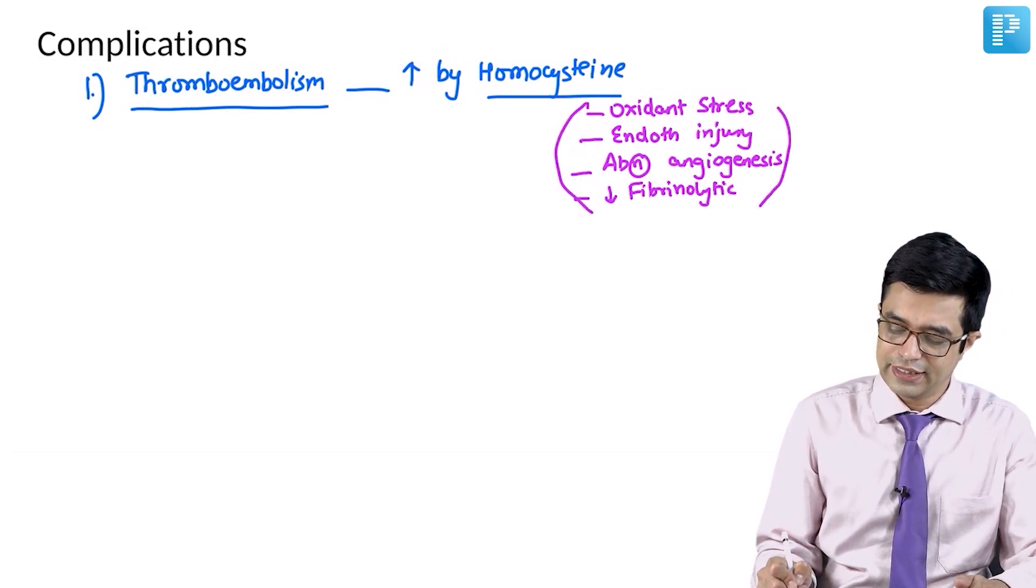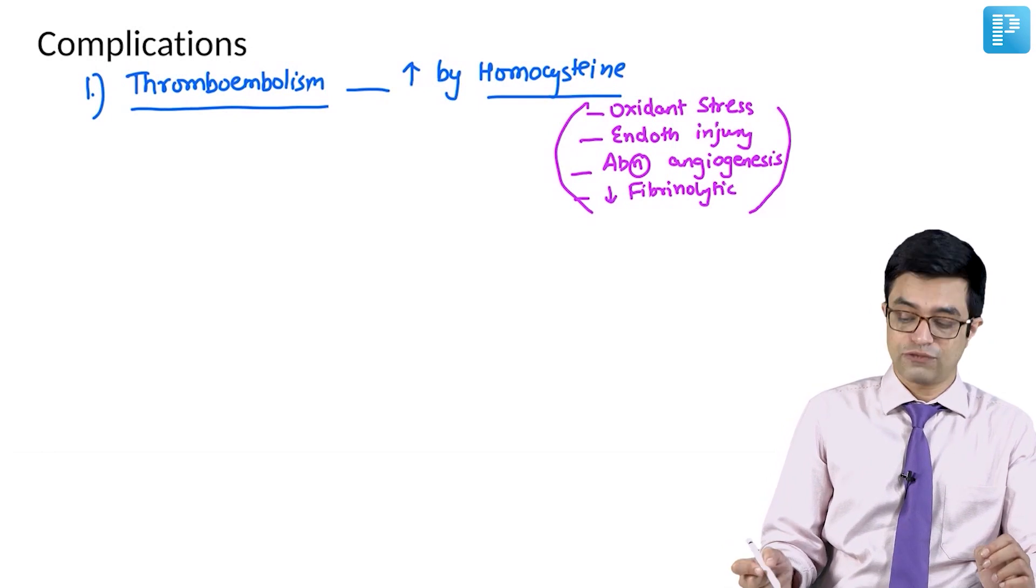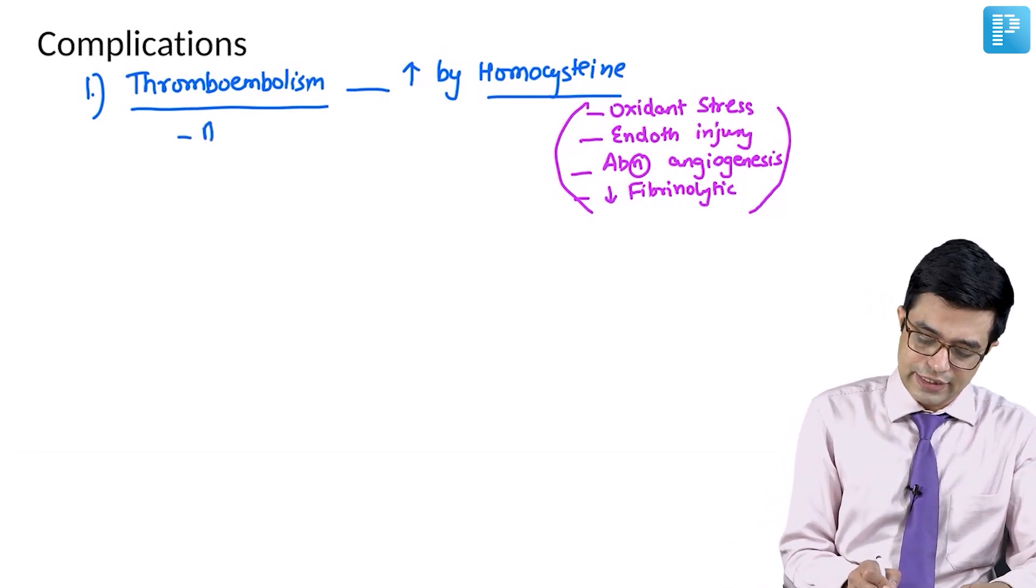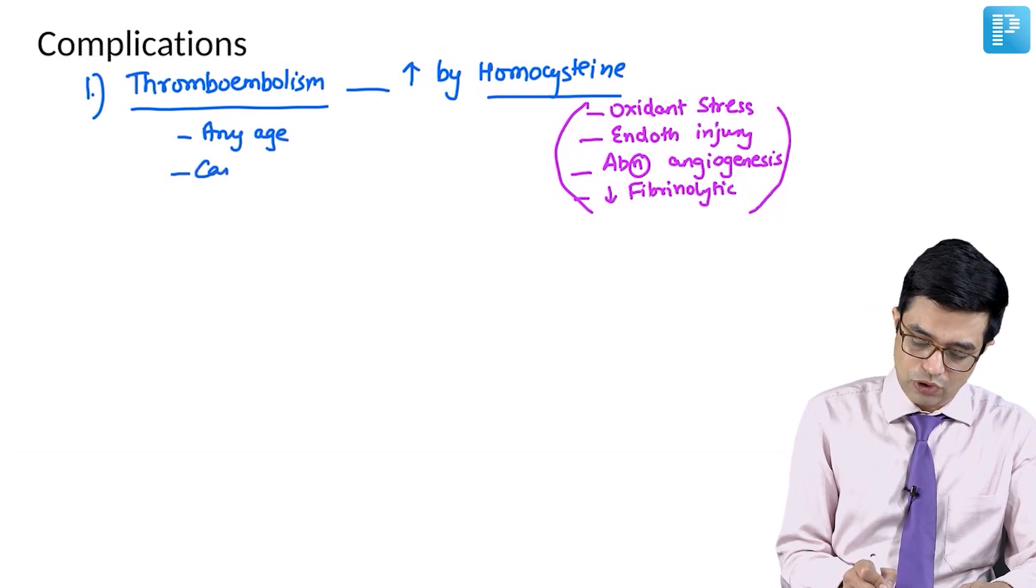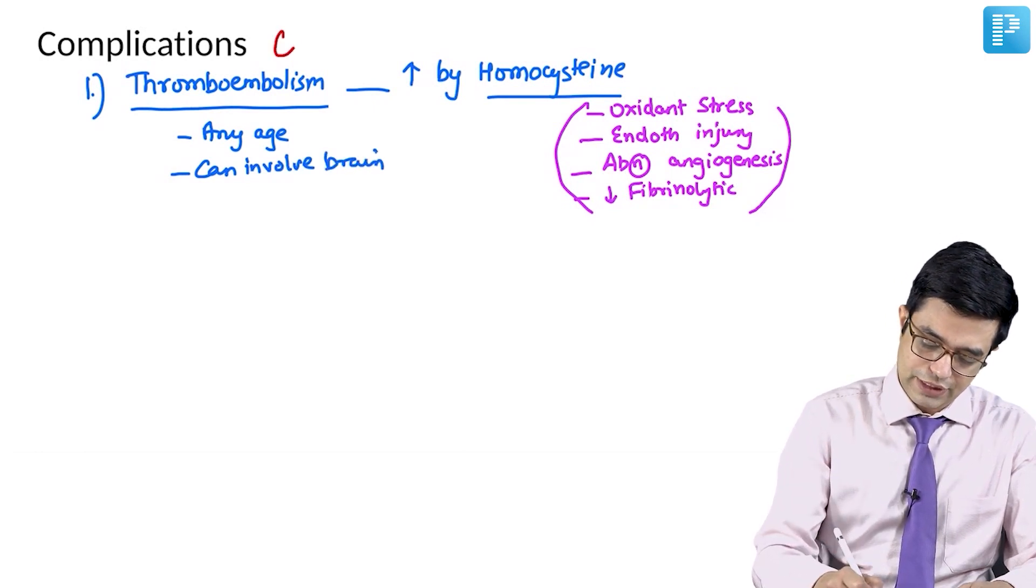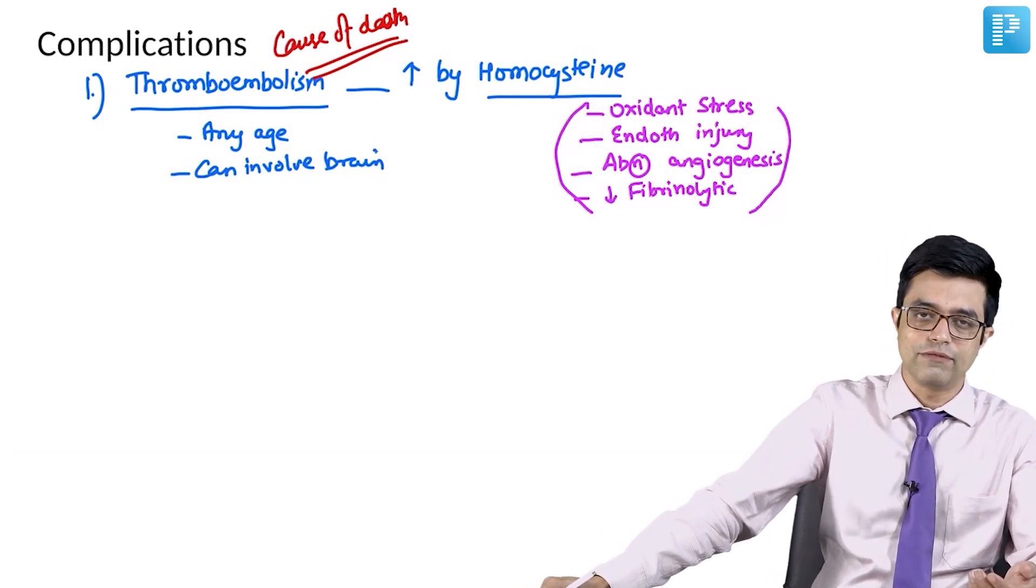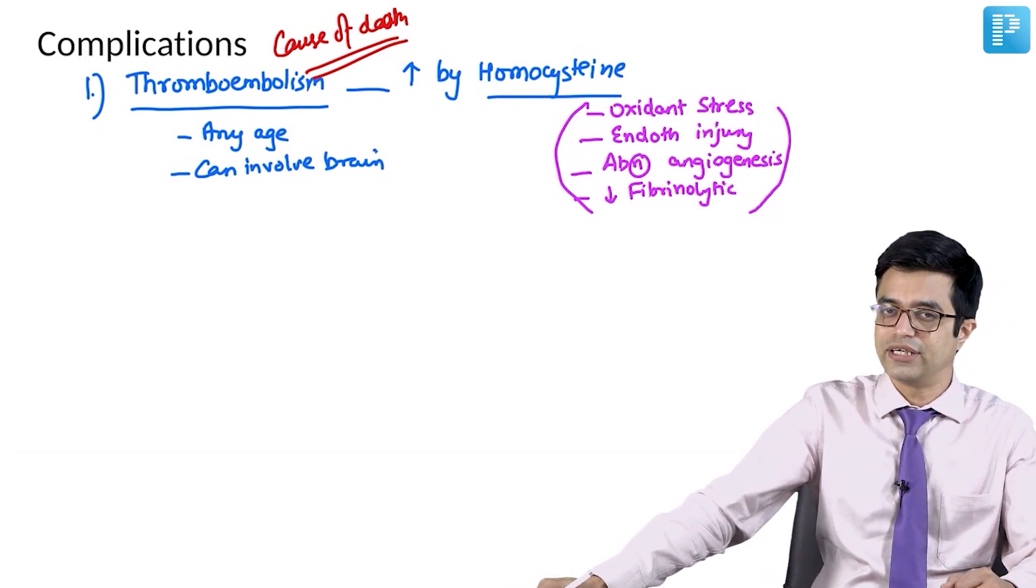The combination of these is responsible for increased risk of thromboembolism in the body. Thromboembolism can occur at any age and can involve, frequently it can involve the brain as well. Thromboembolism is considered to be the cause of death in homocystinuria. Later in life, the milder forms, they can result in myocardial infarction at a relatively early age in adults as well.